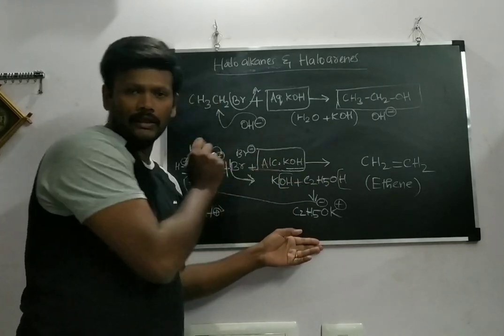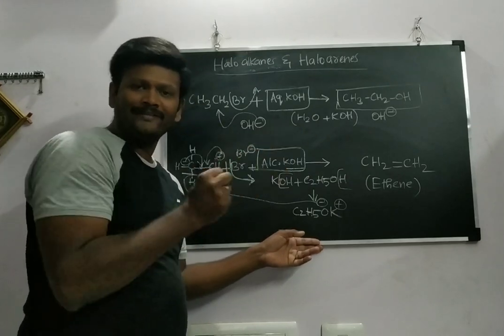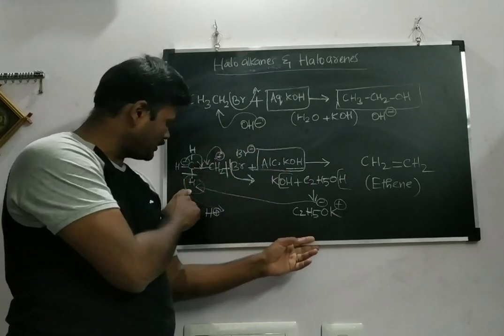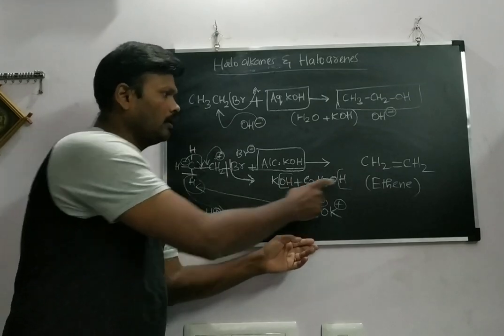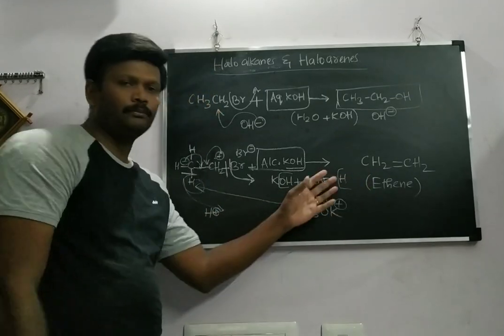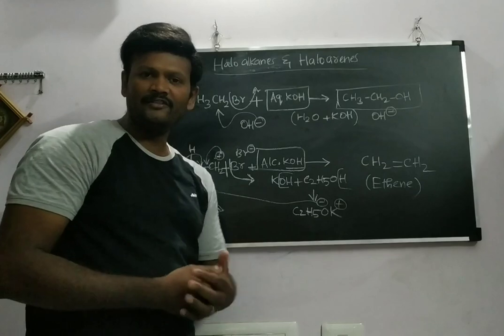In the case of alcoholic KOH, it always plugs the hydrogen, especially the beta hydrogen. So I'm getting an alkene as a product. That's the difference between these two.